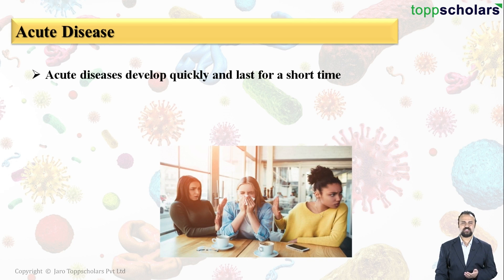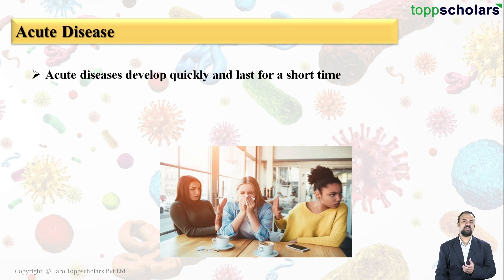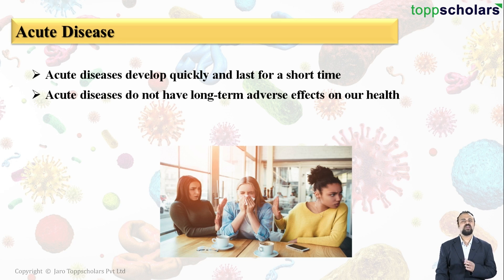Acute diseases are the ones which develop quickly and last for a short time. For example, when you get a cold, it occurs suddenly and it will last for about a week. Even if you don't take any medication, it will go away on its own after a week — that means it lasts for a short time.